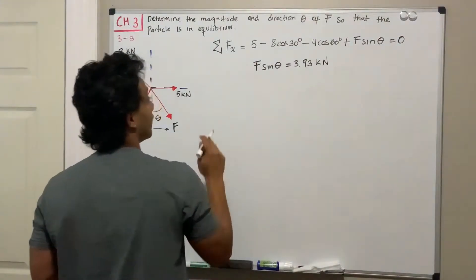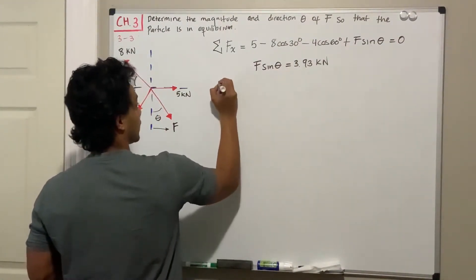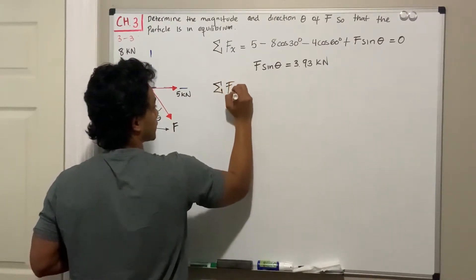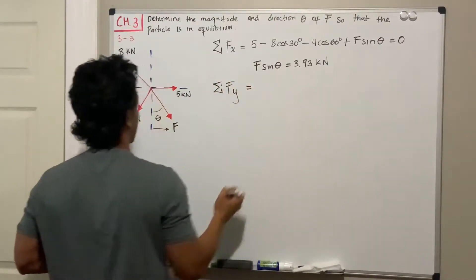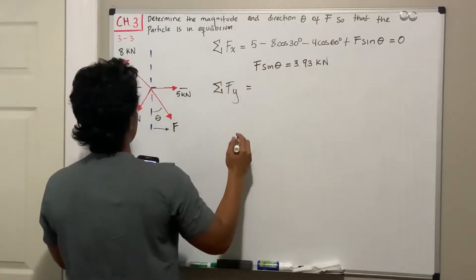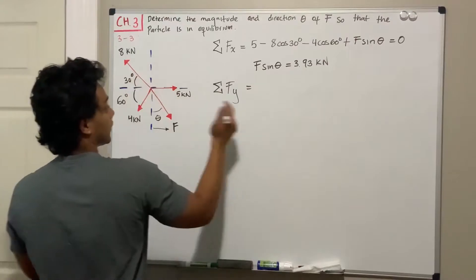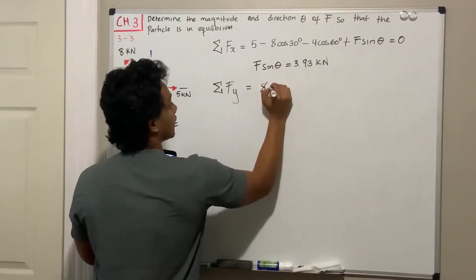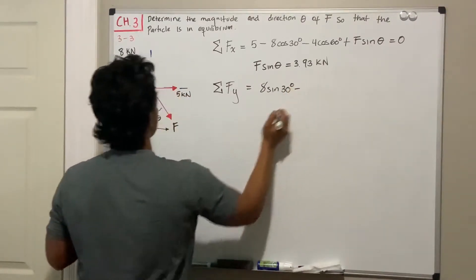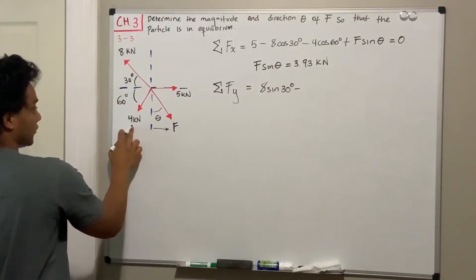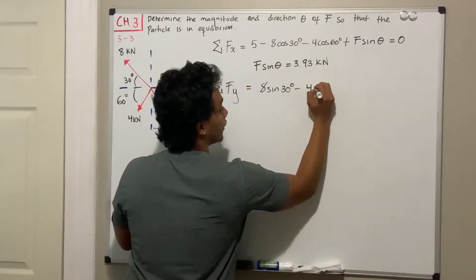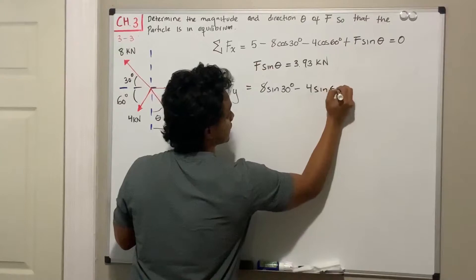Now since we have two unknowns, we need an extra equation. Let's do the sum of forces in the y direction. The eight kilonewtons is going up, and the sine gives me that component — so eight sine of 30 degrees — minus the four kilonewtons multiplied by the sine of 60, four sine of 60 degrees.